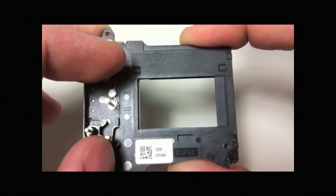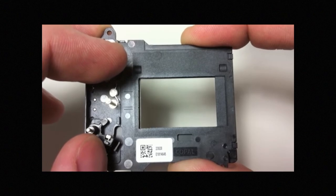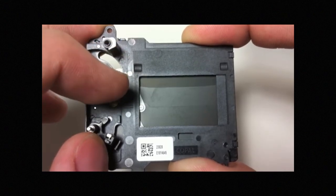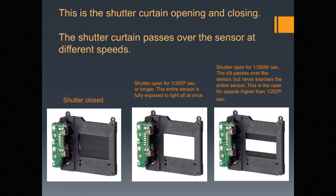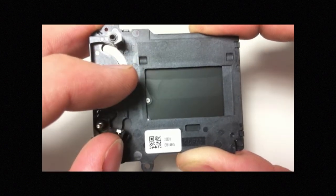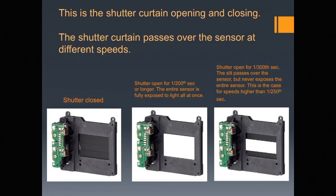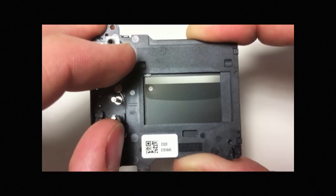This is the shutter curtain opening and closing in a digital camera. On the left, the curtain is closed, and then when it opens up, it lets light in to hit the sensor. On the right, the shutter curtain passes over the sensor at different speeds, so the slit can get smaller and smaller, and the speed at which the curtain travels across the film speeds up.